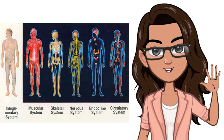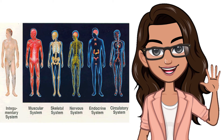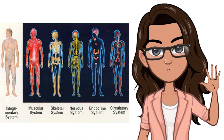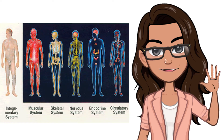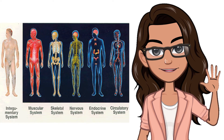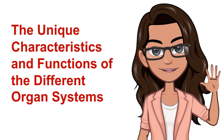Our daily activities are made possible due to the function of the different organ systems. The functions of each organ system overlap, and the body of an organism could not function completely without the cooperation of all organ systems. Yet each organ system has distinct and unique characteristics that perform a specific function for the survival of an organism. Let's learn those unique characteristics and functions.